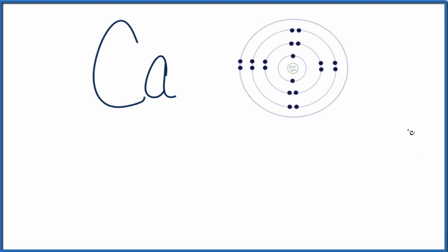In this video, we'll write the Lewis structure for Ca2+, the calcium ion. Let's start first, though, with just calcium, as we find that on the periodic table.